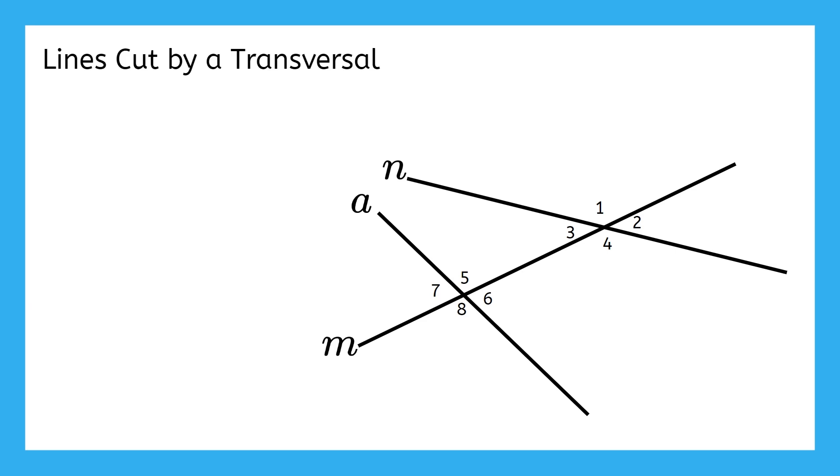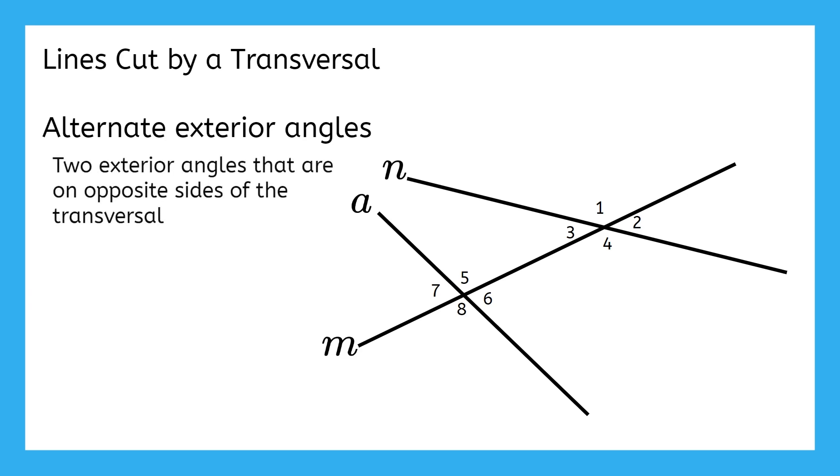The pair of angles we are going to discuss here are called alternate exterior angles. The definition for alternate exterior angles is two exterior angles that are on opposite sides of the transversal. The alternate exterior angle pairs are 1 and 8, and 2 and 7, since in each pair both angles are exterior but on different sides of the transversal.